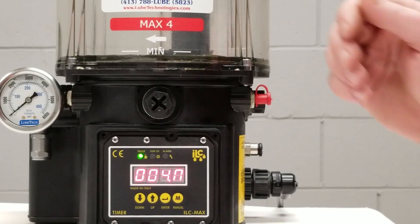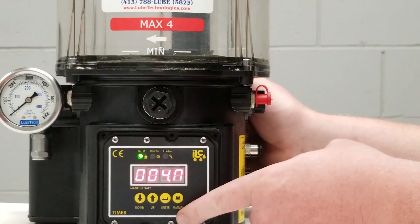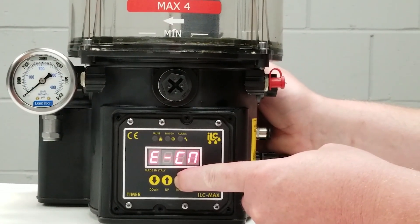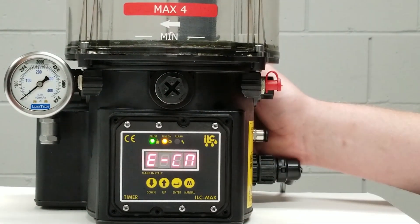So let's enter the programming mode. We do that by simply pressing and holding the enter key for approximately three seconds, and that's going to take us to E-CN.